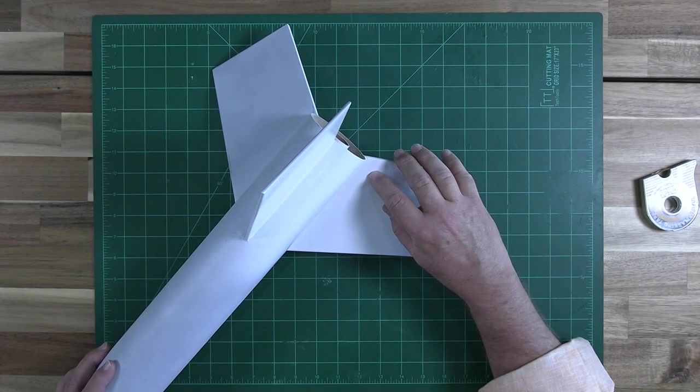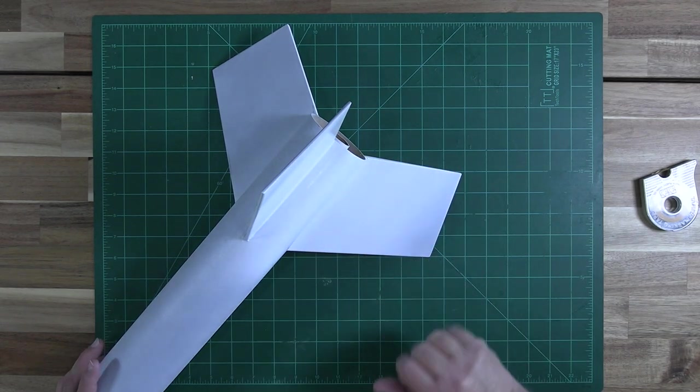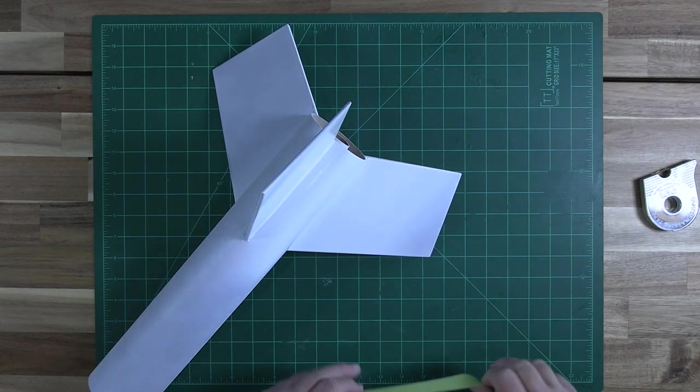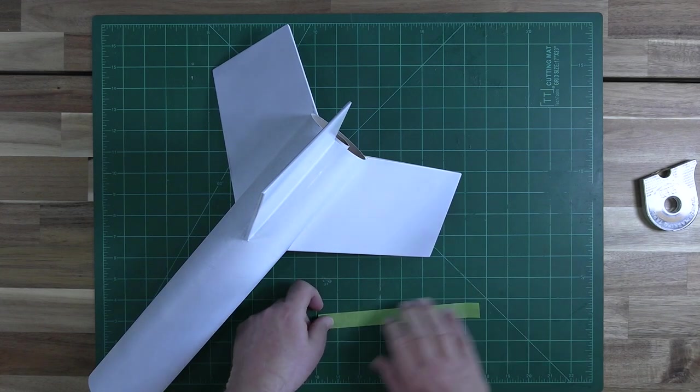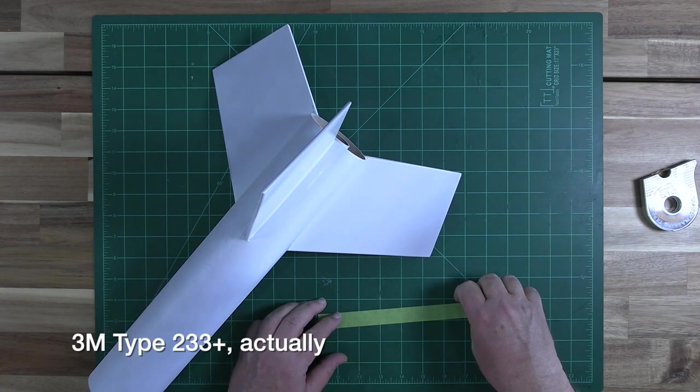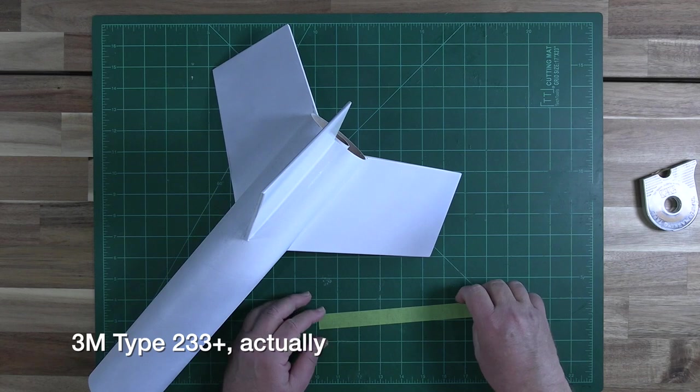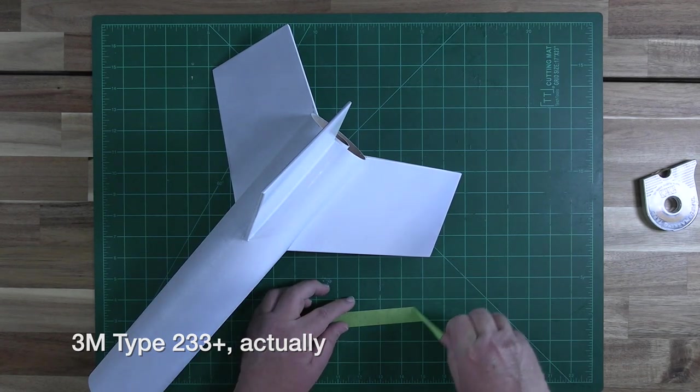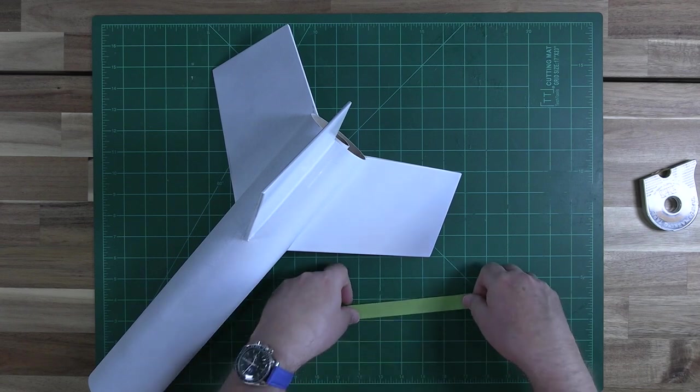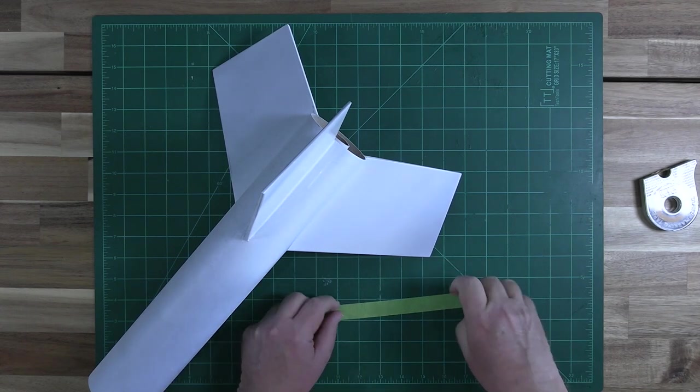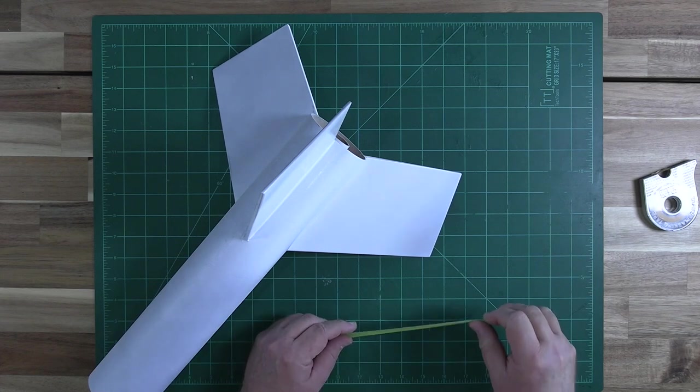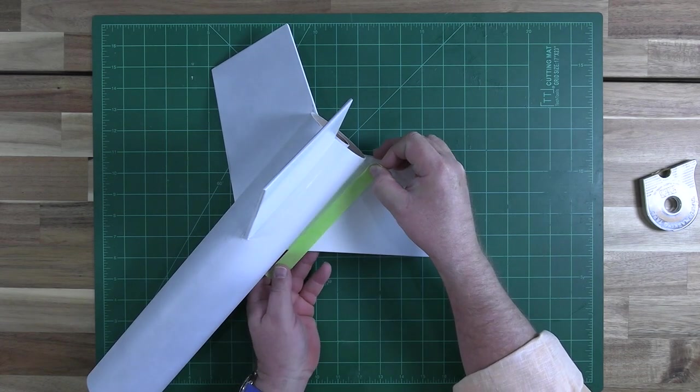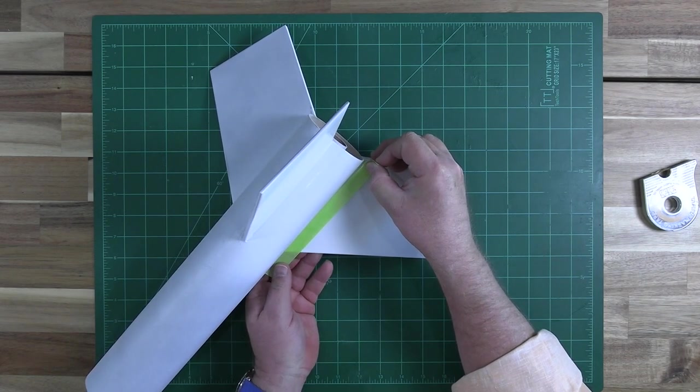We'll be using a strip of general use masking tape to locate the first stripe. This is 3M type 233 tape. Think of it as a quality alternative to standard blue tape. I'll stick it on the cutting mat and peel it up a couple of times. The goal here is to reduce the stickiness of the tape.